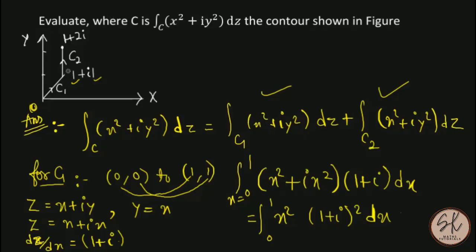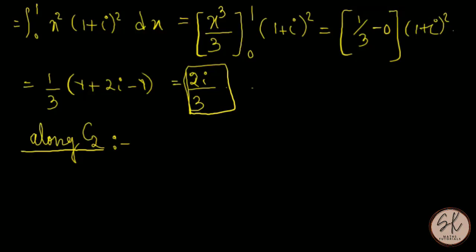Along C1 we got 2i/3. Now for C2: C2 goes from (1,1) to (1,2).